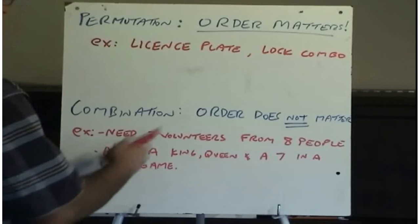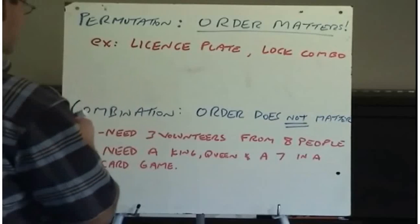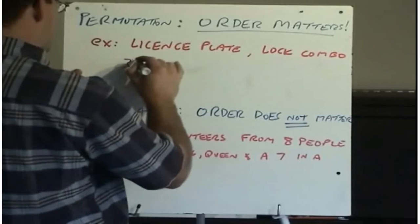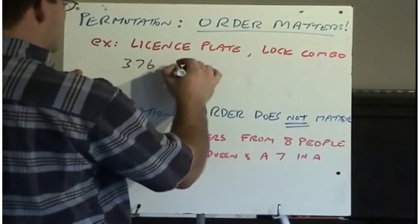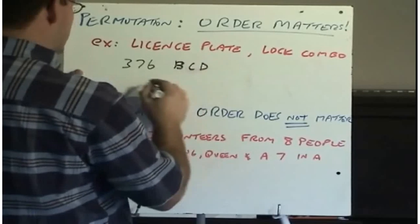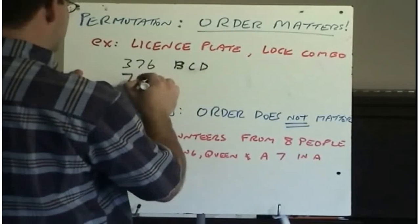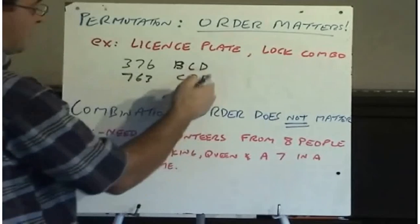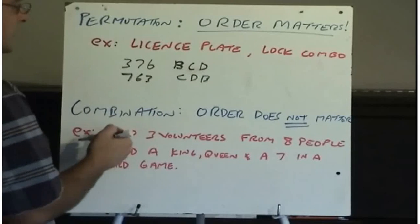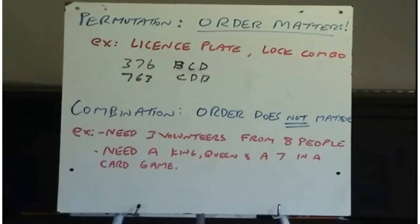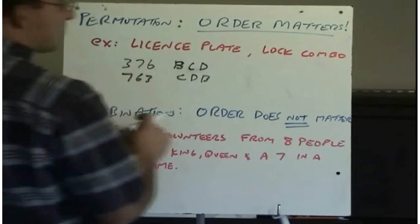An example would be a license plate. Say, my license plate was 376BCD, and your license plate was 763CDB. We've got the same letters and the same numbers in our license plate, but because the order is different, these are two totally different license plates. So we've been working with permutations.